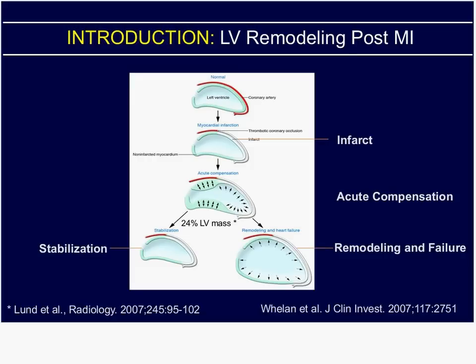With this audience, I'm sure you're quite familiar with the progression of LV remodeling as a result of myocardial infarction. Here we've got a diagram from a review paper depicting the infarct zone and acute compensation. One thing that has become evident with the advent of cardiac MRI and late gadolinium-enhanced imaging is that the cut point between stabilization and LV remodeling, at least in humans treated with ACE inhibition and beta blockade, is about 24% of LV mass.